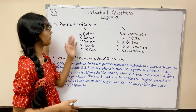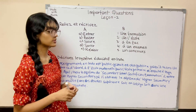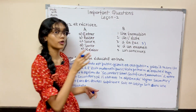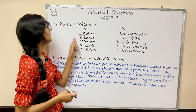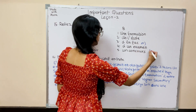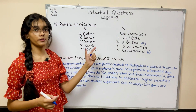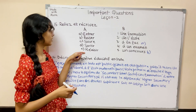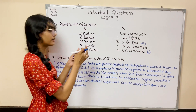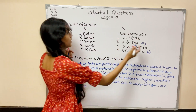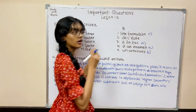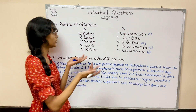Question 15: Another match-the-following, entirely from the expressions box. First: s'inscrire — à la fac (fac is the short form of faculté). Next: passer un concours means to appear for a test, not to pass — important distinction. To pass an exam is réussir à un examen. Then: suivre une formation — to follow a particular course. And: sortir de l'école — to get out of school.